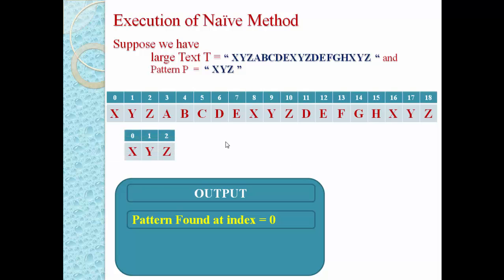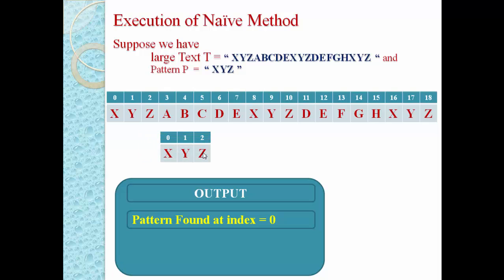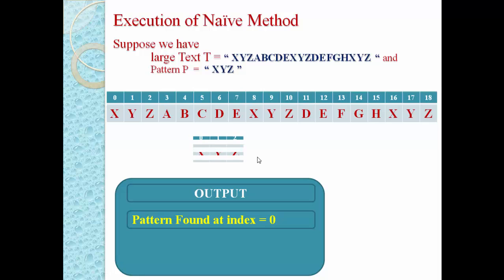After shifting the pattern by 1, we compare the second character of text with the first character of the pattern: Y versus X — no match. We shift again and compare Z versus X — no match. Shift again: A versus X — no match. Shift again: B versus X — no match. We continue performing shift operations one by one through the remaining characters.